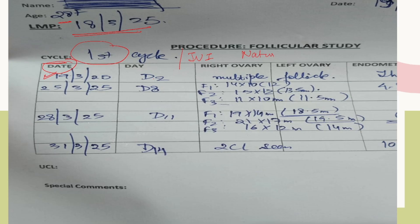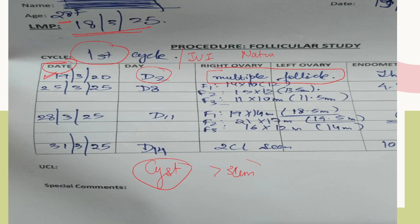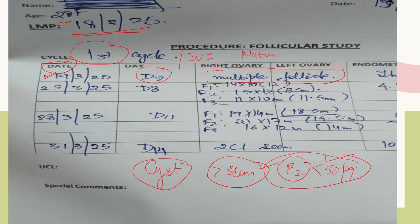We are starting the follicular study on 19th March — that will be Day 2. Doing the scan on Day 2 is very important to confirm there is no cyst. If a cyst is more than 3 centimeters, we confirm it is not functional by doing an estrogen level test, which should be less than 50 picograms. If it is a non-functional cyst, it will not cause a problem and you can go ahead with the full study.